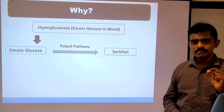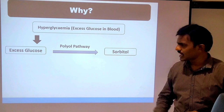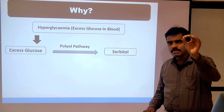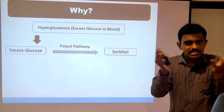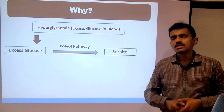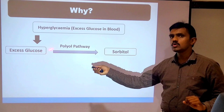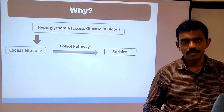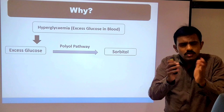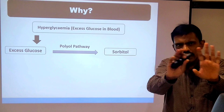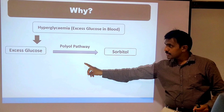This excess glucose is acted upon by an enzyme named aldose reductase, which converts the additional glucose to sorbitol through the polyol pathway.